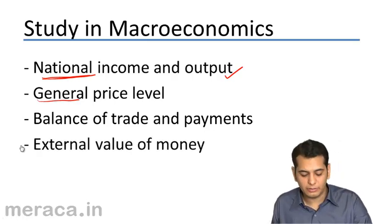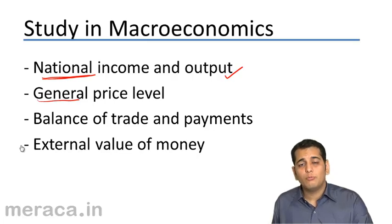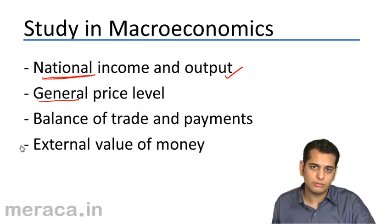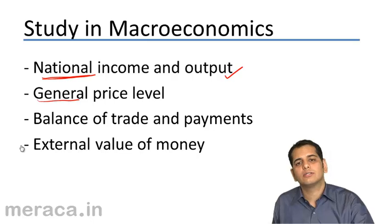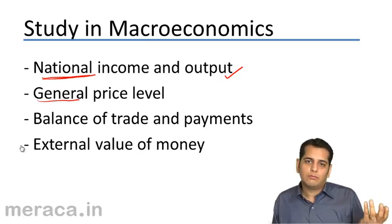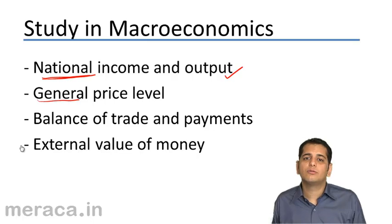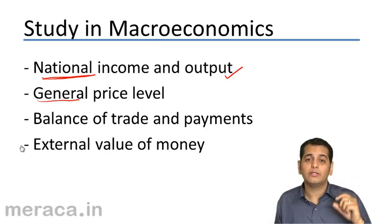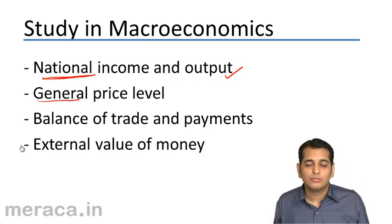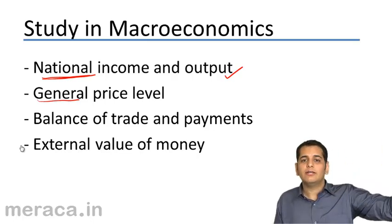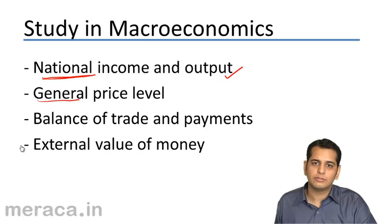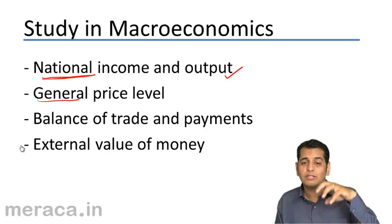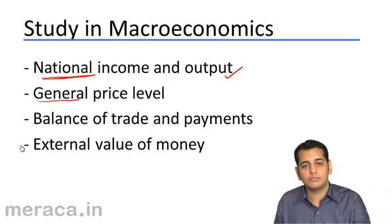External value of money refers to the value of a currency in terms of other countries' currencies. The value of the rupee is different when compared to the dollar, the pound, or other currencies. What is the value of a nation's currency in relation to the currencies of other countries? It is a macroeconomic concept because it deals with the value of the currency of the whole nation against the currencies of other nations.